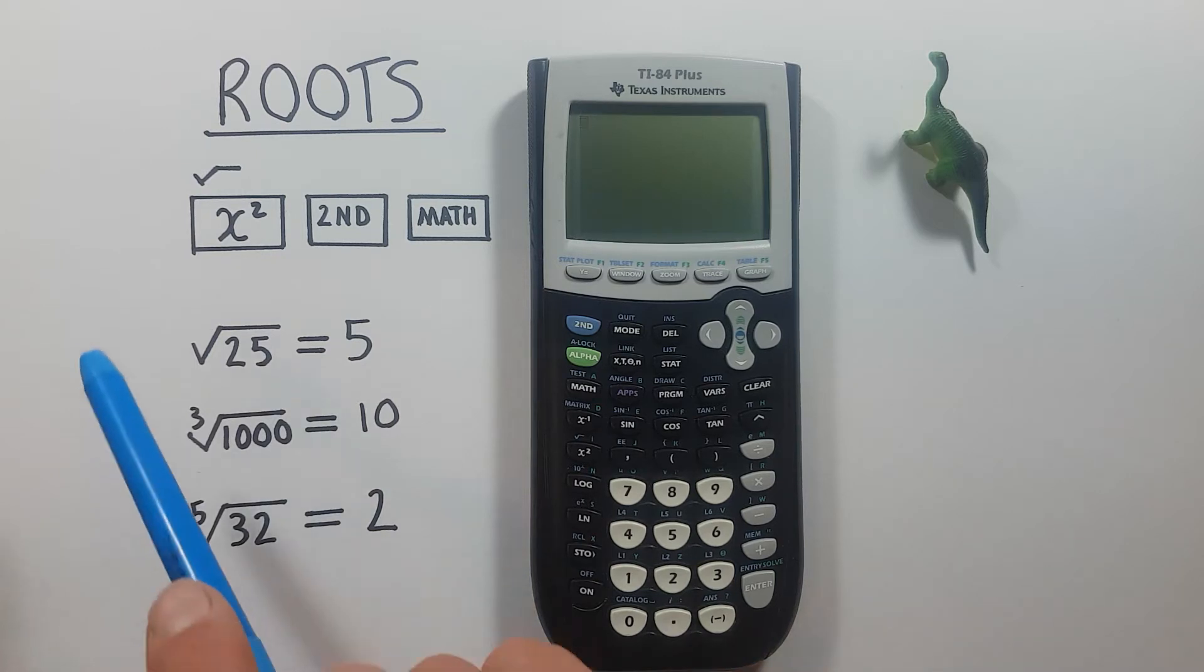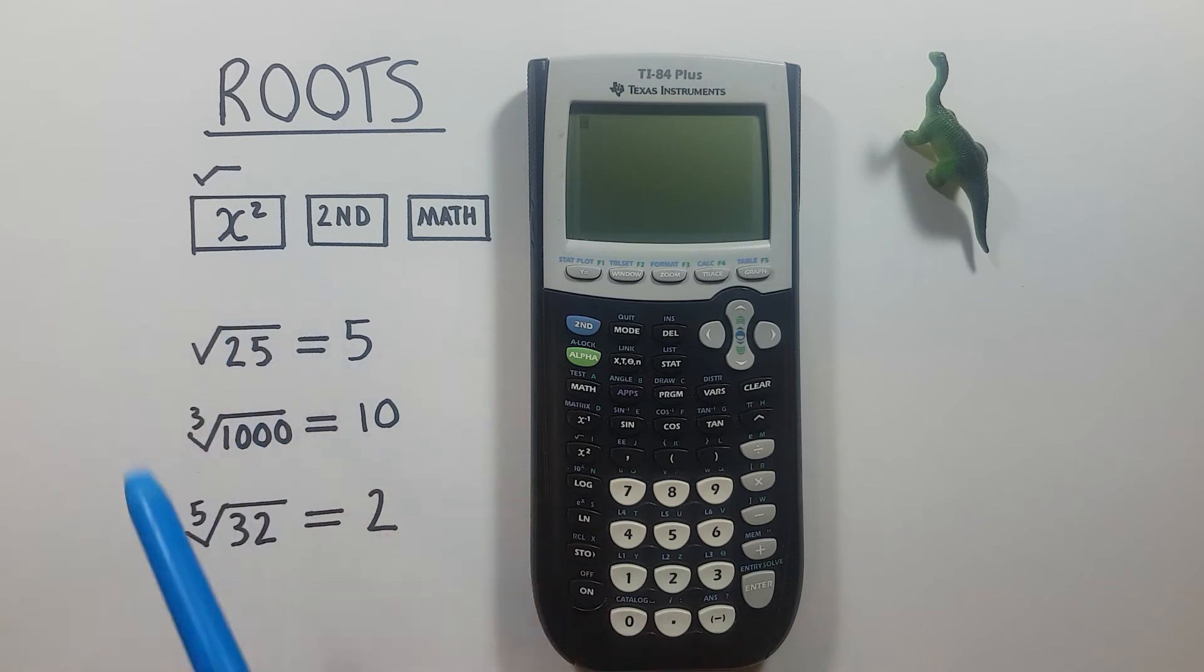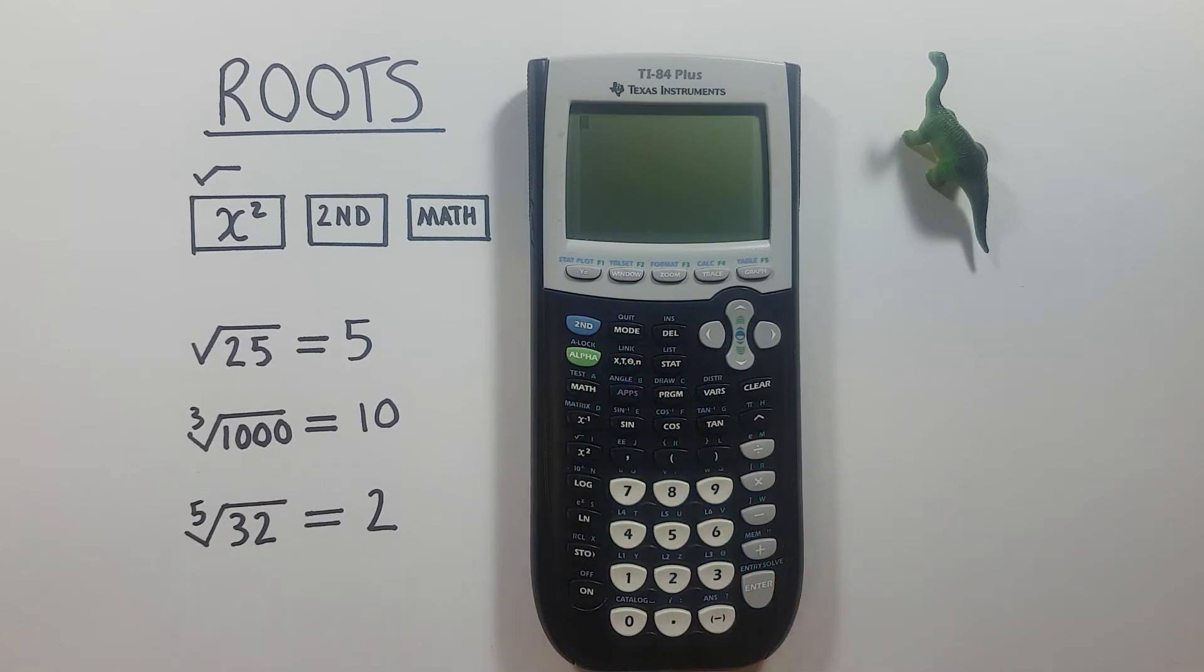To do this we'll be using the x squared key with the second function of the square root that looks like this located here, the second function key that looks like this located here, and the math key that looks like this located here.